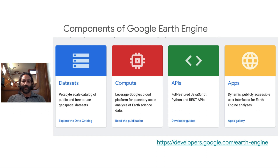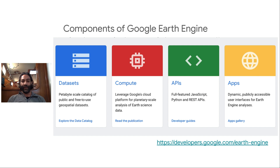To do that, you also need APIs. We provide a JavaScript API, a Python API, and a REST API so that you can implement your geospatial workflows in Earth Engine. We also provide interactive apps that let you display the results of your analysis. So if you design an algorithm that you're very proud of and you'd like to share it with your friends and collaborators, you can build an app that will let any user see the results of your analysis.